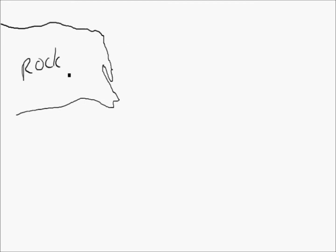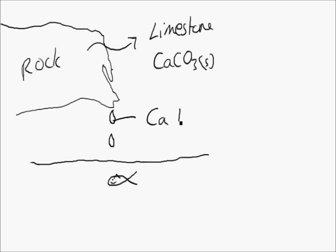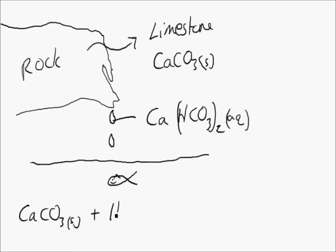If the rock happens to be limestone - and if you've been to any limestone cliffs you know what it looks like - it's mainly made up of calcium carbonate. That contains an awful lot of calcium. When it reacts with the acid rain, it makes the soluble compound calcium hydrogen carbonate. That means the previously insoluble calcium carbonate is now able to dissolve in water and be washed into watercourses. Here's the formula for calcium hydrogen carbonate - AQ means it's aqueous, meaning it's dissolved in water. So calcium carbonate, which is a solid rock, reacts with carbonic acid from the rain, forming calcium hydrogen carbonate. And because it's an acid-carbonate reaction, you also form water and carbon dioxide gas.